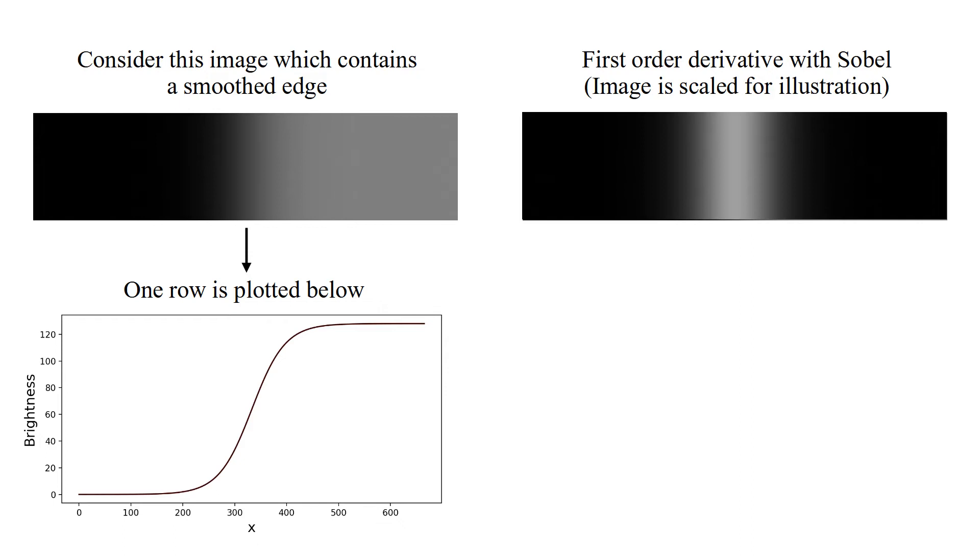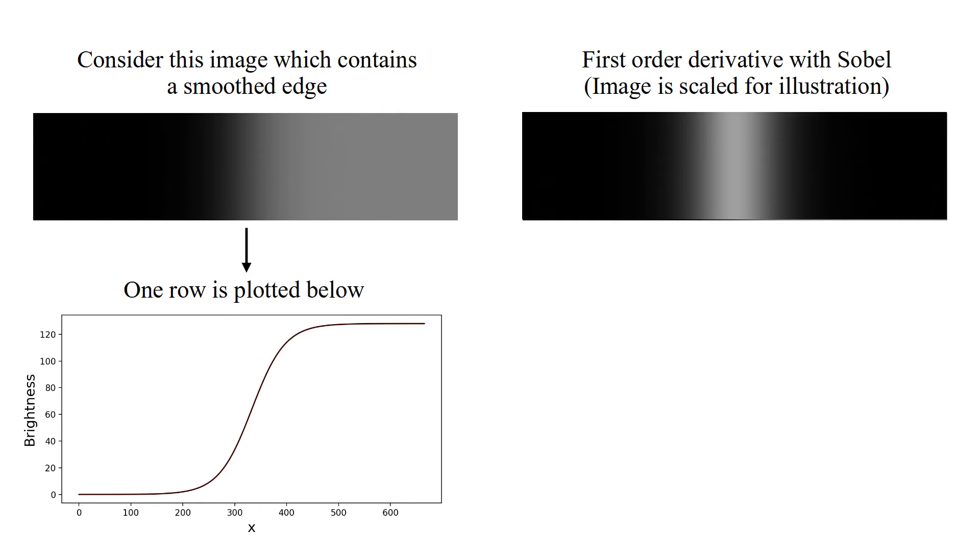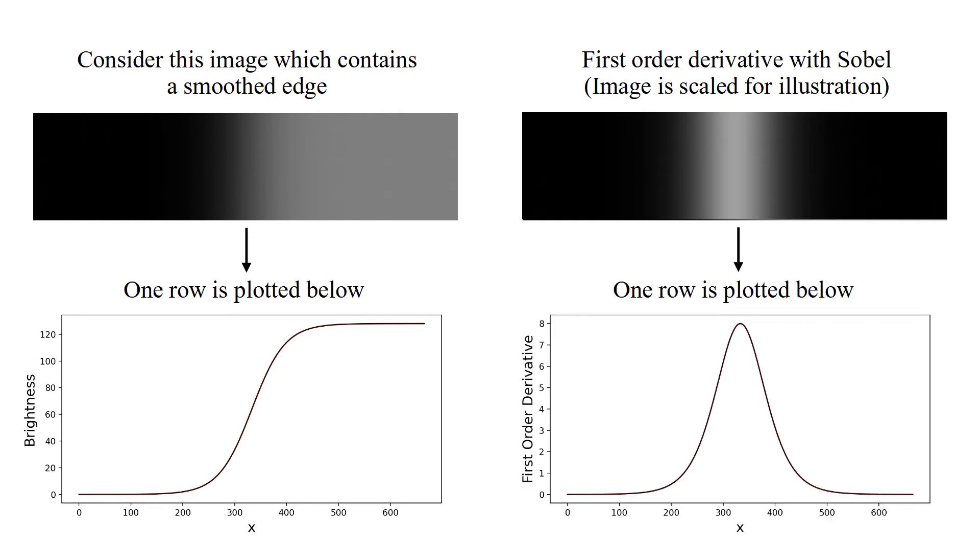One row of brightness is plotted below. And this is first order derivative computed using Sobel. Image is scaled for illustration. For more details on Sobel method you may refer to Prewitt Sobel edge detection video on my channel.